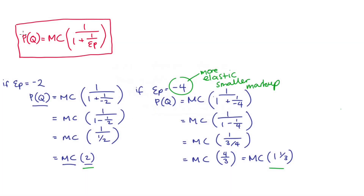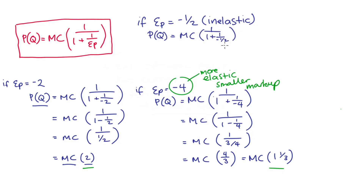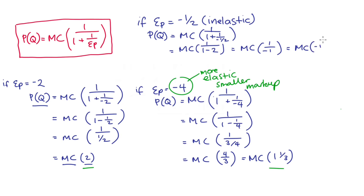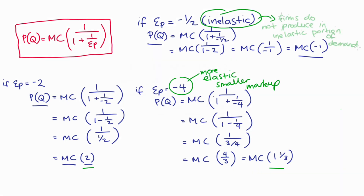We can also see from this expression that if we have inelastic price elasticity of demand, the optimal price actually comes out negative, which is strange. For instance, if elasticity was negative a half — a nicely inelastic figure — then we have price equals marginal cost multiplied by one divided by one plus one divided by negative a half. One divided by negative a half is negative two, so we have one minus two on the denominator, which is negative one, and one divided by negative one equals negative one. This strange result points to a general feature of profit maximization: firms never work in the inelastic part of the demand curve.